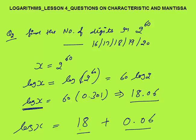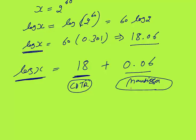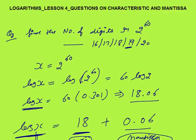So log x = 18.06. Breaking this: characteristics = 18, mantissa = 0.06. Mantissa always lies between 0 and 1. Characteristic is one less than the number of digits, so if characteristic = 18, then x is a 19-digit number. So 2^60 has 19 digits — that is option 4.